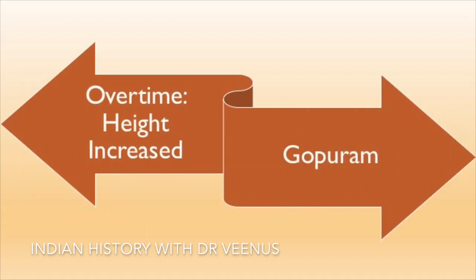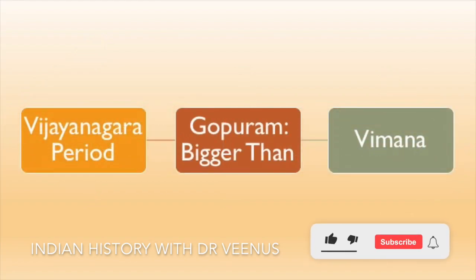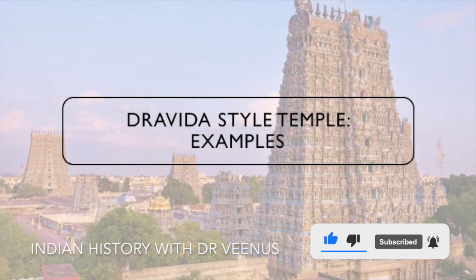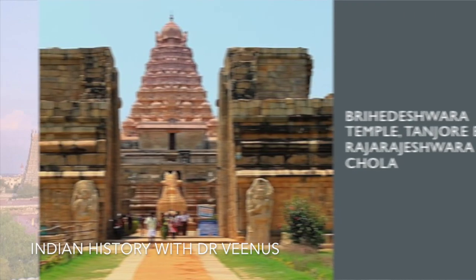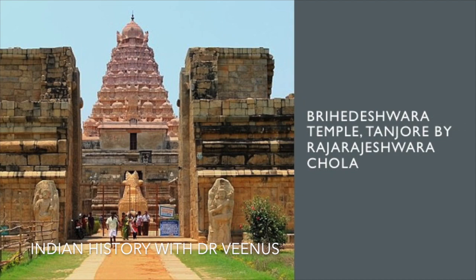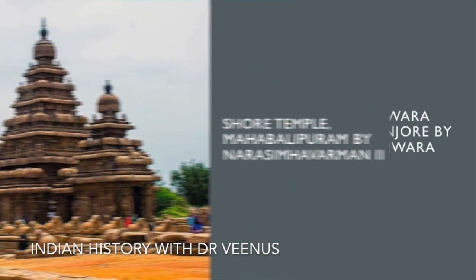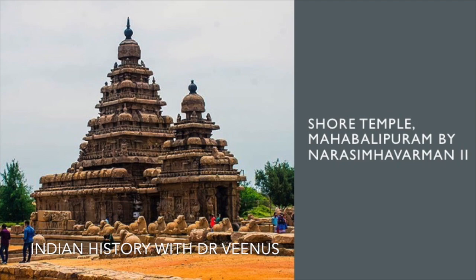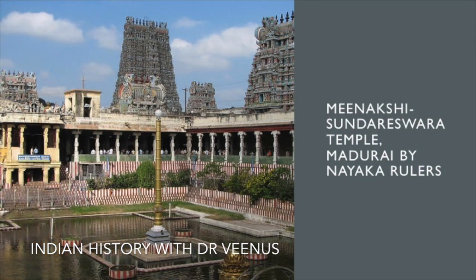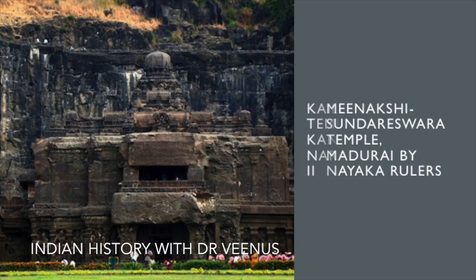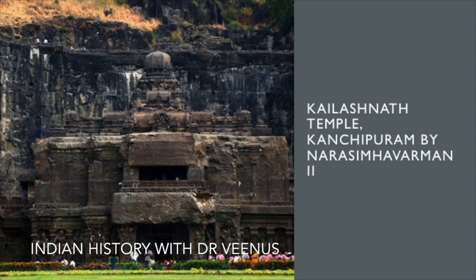Over the period of time, the height of the Gopurams kept increasing, and in the Vijayanagara period, the Gopurams had almost become bigger than the Vimanas. The best examples of temples built in the Dravid style are: the Brihadeshwar temple at Tanjore, built by Raj Rajeshwar Chola; the Shore temple at Mahabalipuram, built by Narasimhavarman II, the Pallava king; the Meenakshi Sundareshwar temple at Madurai, built by the Nayak rulers; and the Kailashanatha temple at Kanchipuram, built by Narasimhavarman II, the Pallava king.